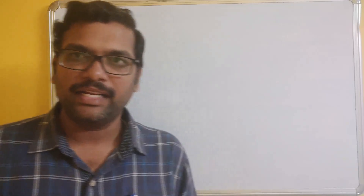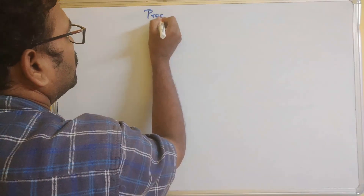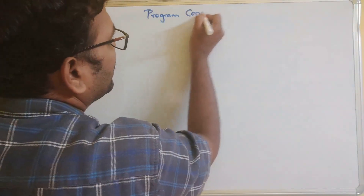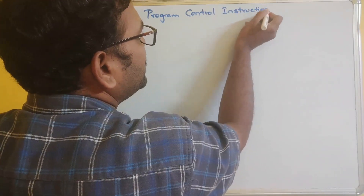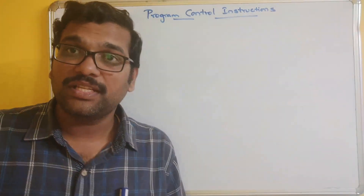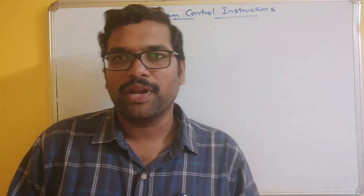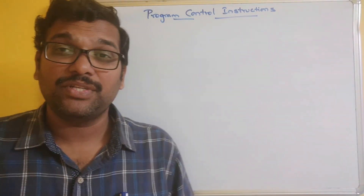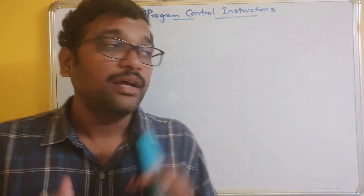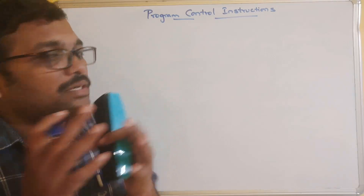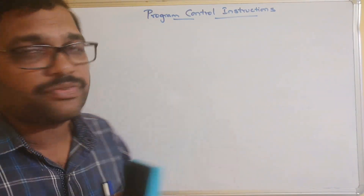Hello friends, welcome back to our channel. In today's session we will see one more concept in computer organization or computer architecture, that is program control instructions. These are the instructions which control the flow of execution in the program. In our previous session we have seen different types of instructions, that is data manipulation instructions.